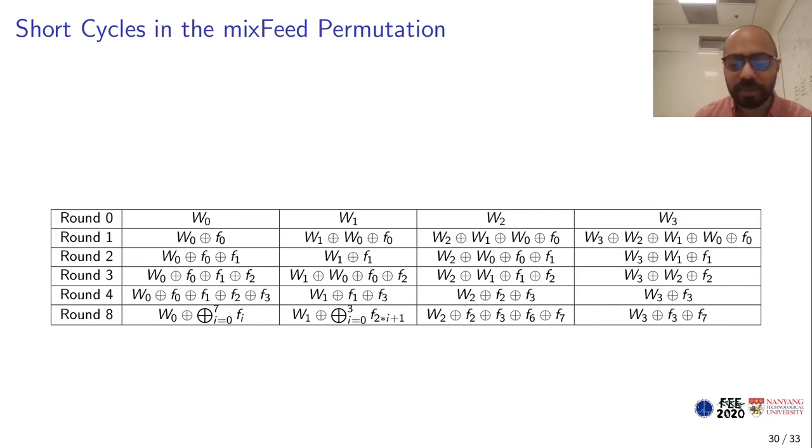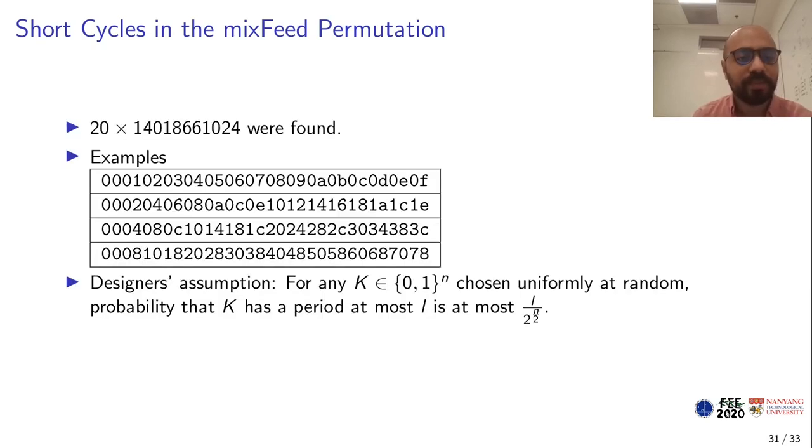There is a feedback function which is different for every location. If we have this feedback function equal to zero, it means we have found a fixed point over these many rounds. Of course, what we want is that we want to find a fixed point over a multiple of 11 rounds such that it presents a short cycle for the mixFeed mode. We have found 20 such cycles, and the cycle length is this number shown here, which means we have found 20 times this number weak keys for mixFeed. I just here show some examples of representative candidates of these cycles. All the cycles we found are presented in the paper.